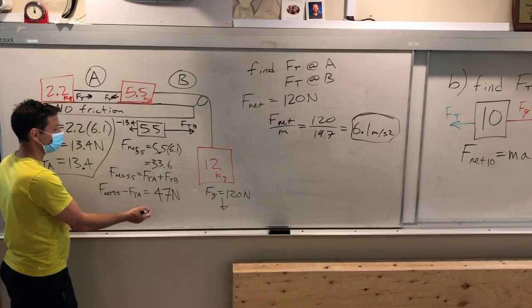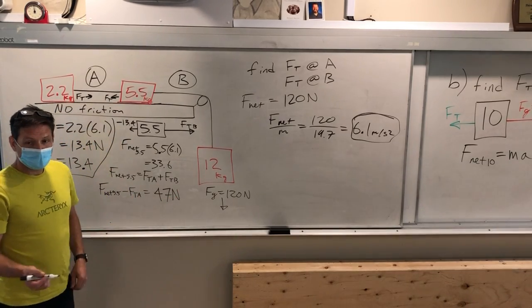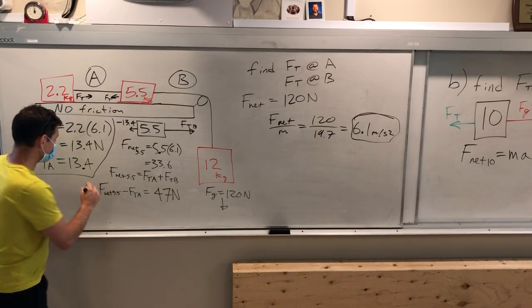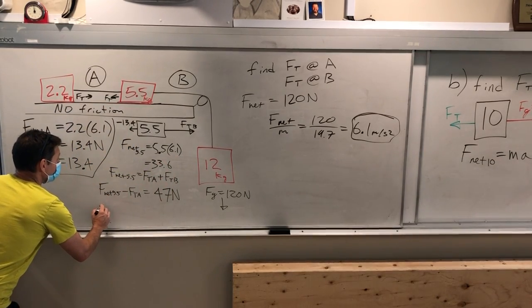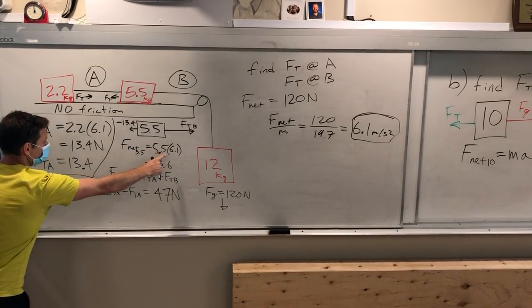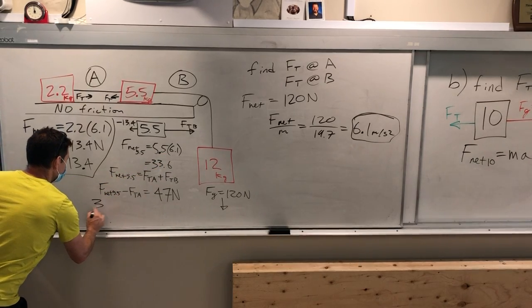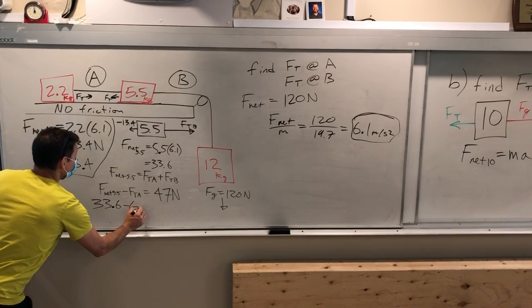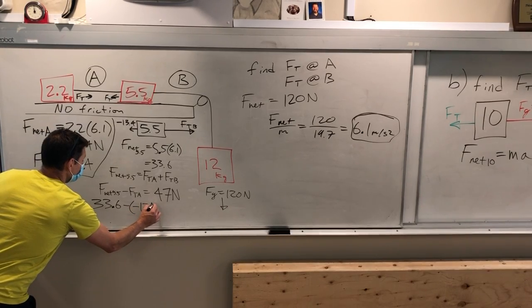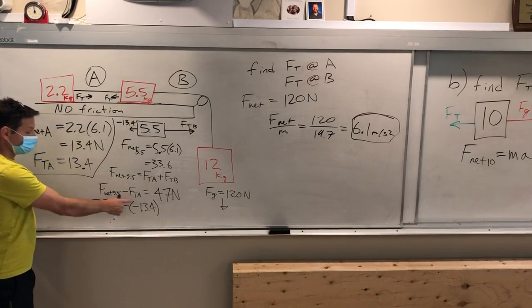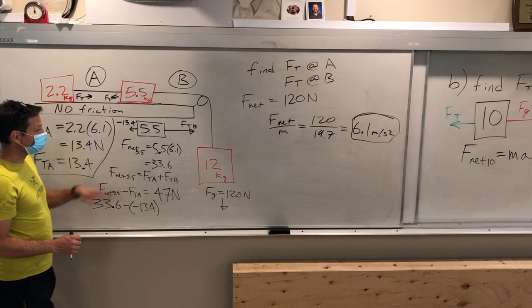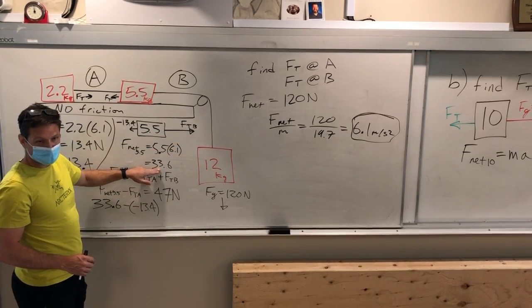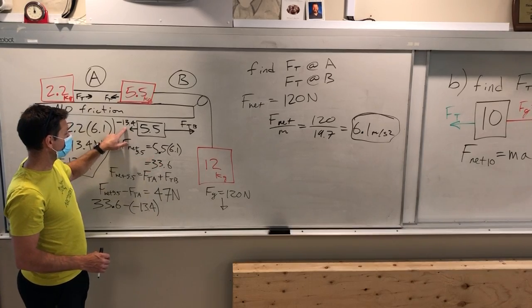It's positive. If you want to check that—wait, why did you add it? Let me write it out. So the net force we said was 33.6, positive, minus negative 13.4. Oh yeah, it's being pulled back. That's right. So this one has to win by 33.6. It has to be that much bigger than this.